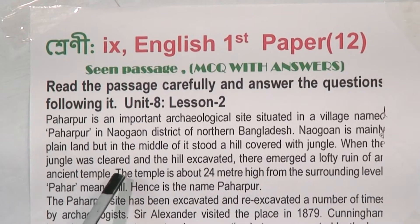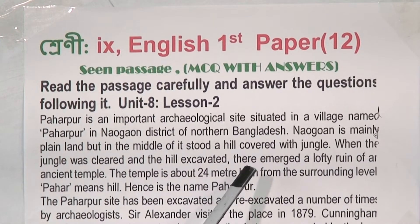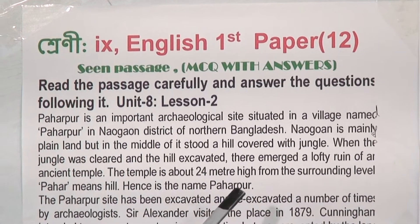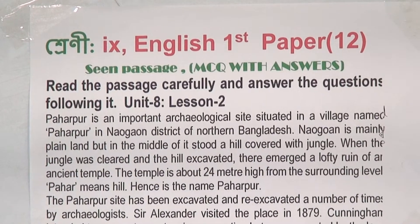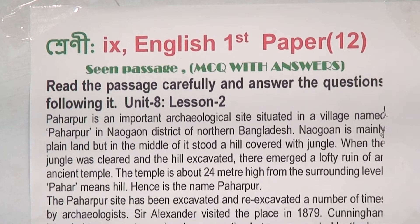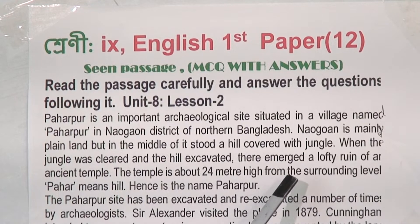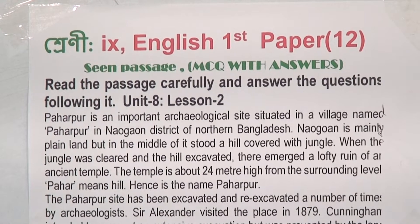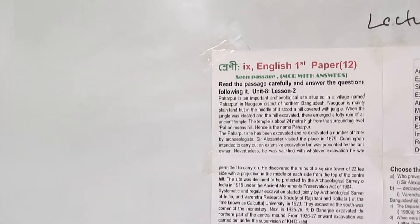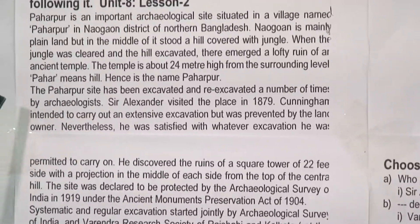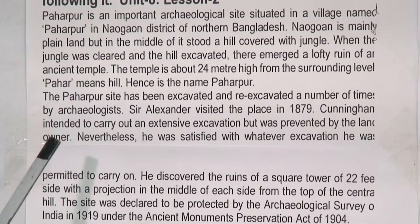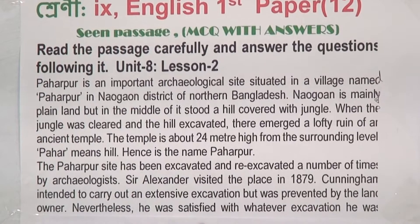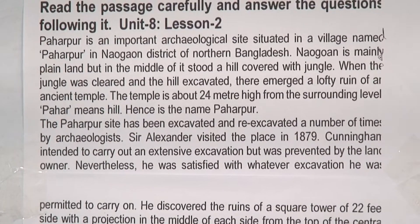Naogaon is a plain land, but in the middle of it stood a hill covered with jungle. In this plain land is a small lofty ruin of an ancient temple. When it was excavated, an ancient structure became visible there. The temple is about 24 meters high from the surrounding level.